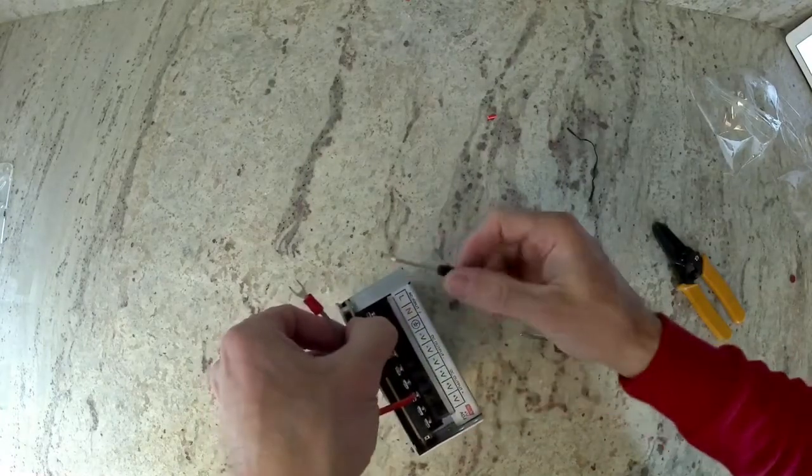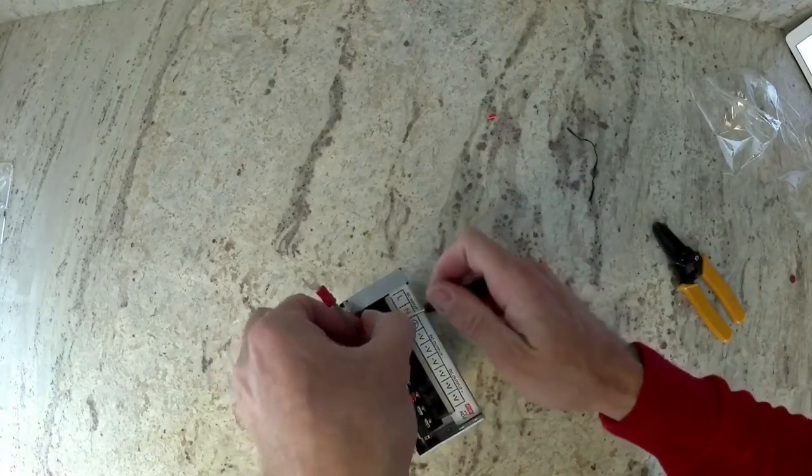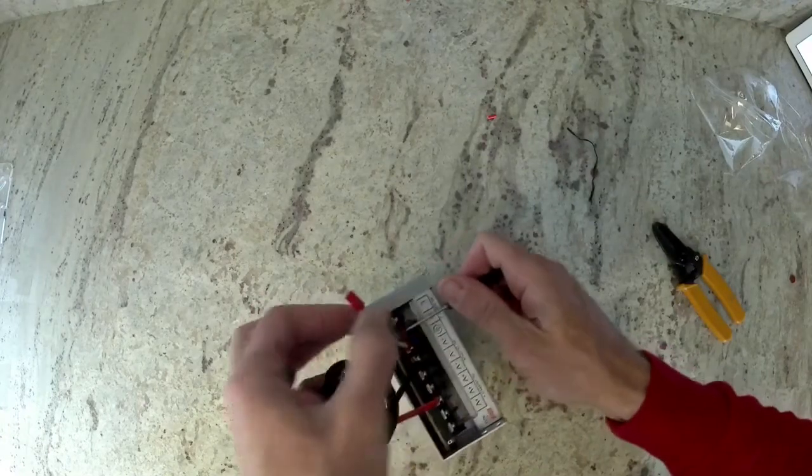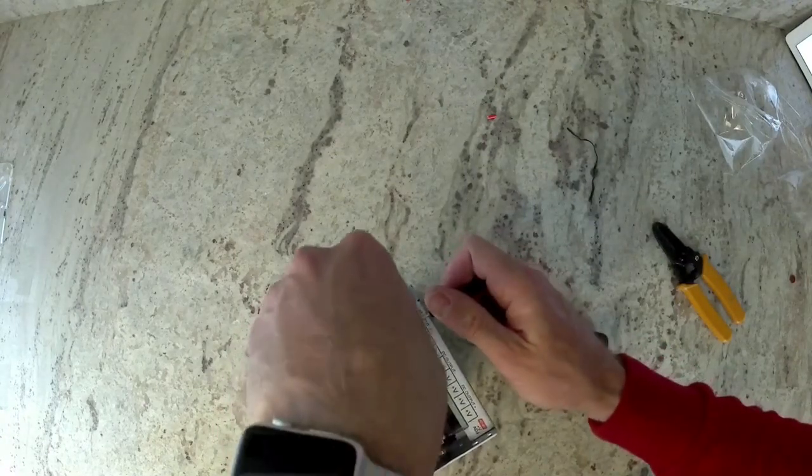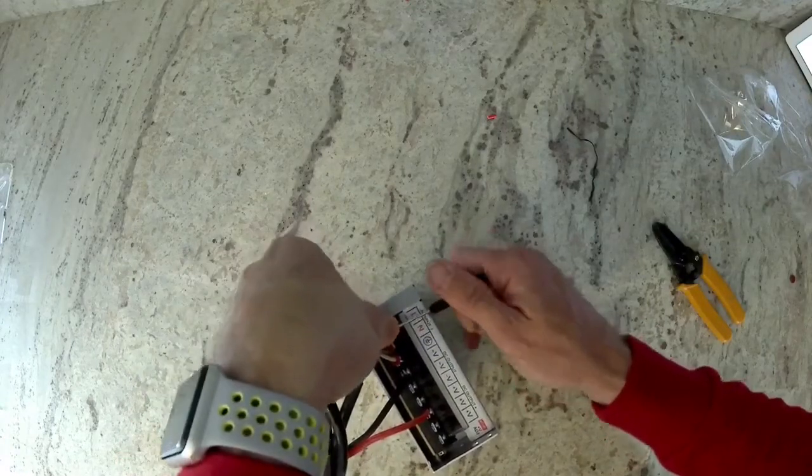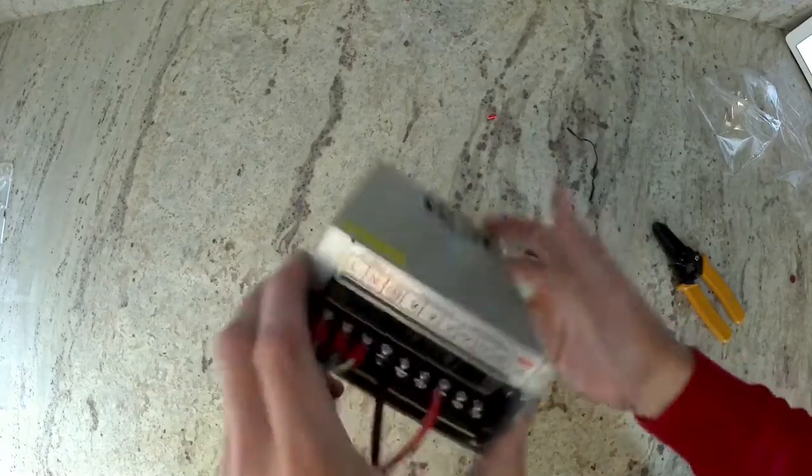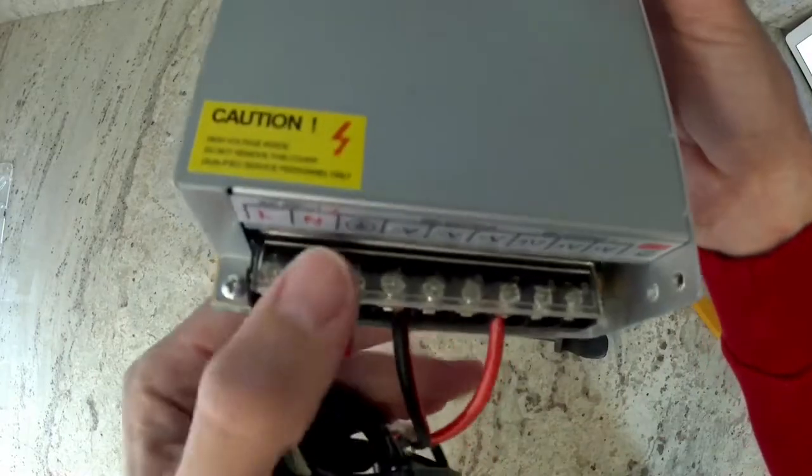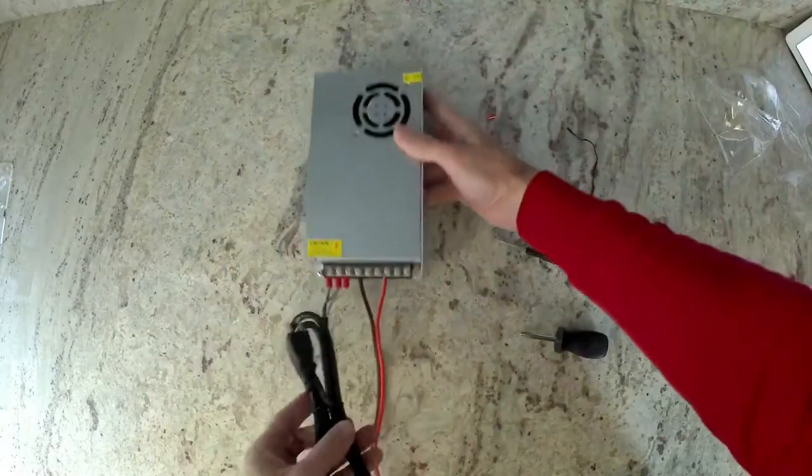The next one is the blue wire, which is going to go on the N, or neutral. Then the last brown wire is going to go under the L, which is live. When you're finished, this is how it should look, and those should all be tightened down.